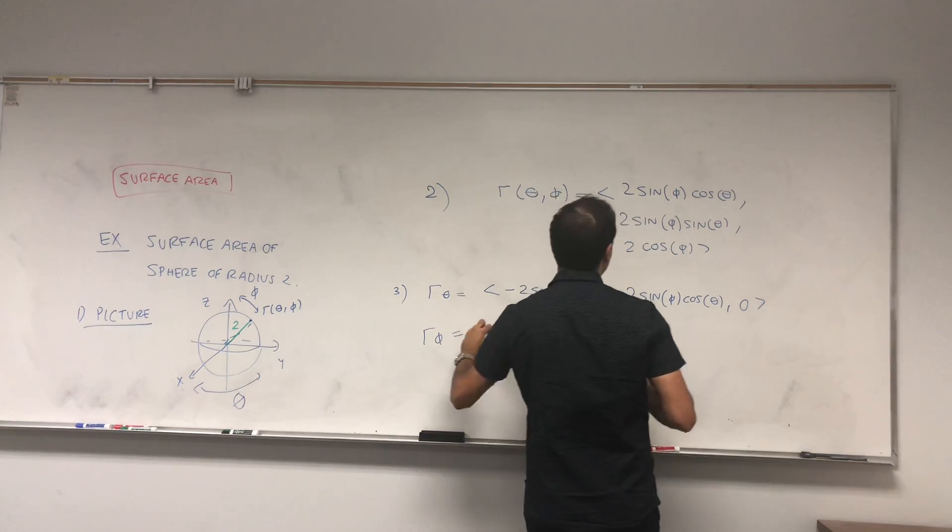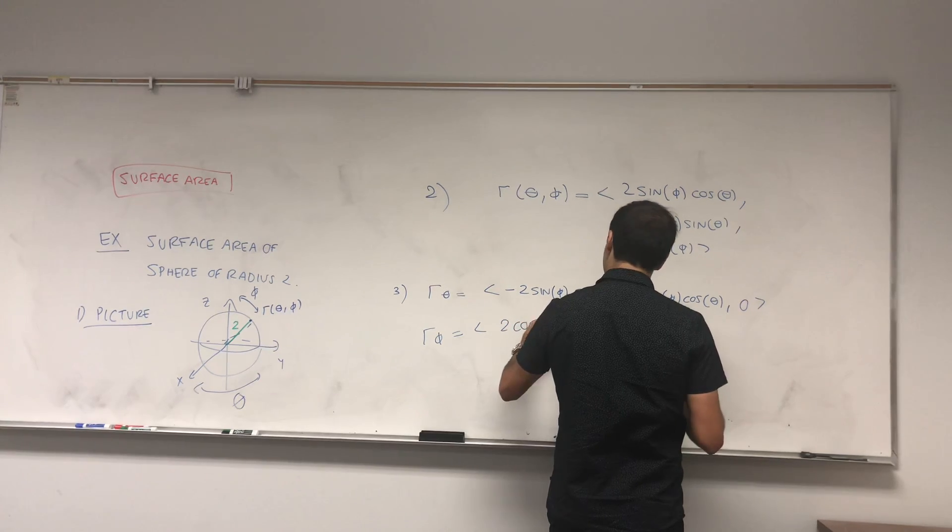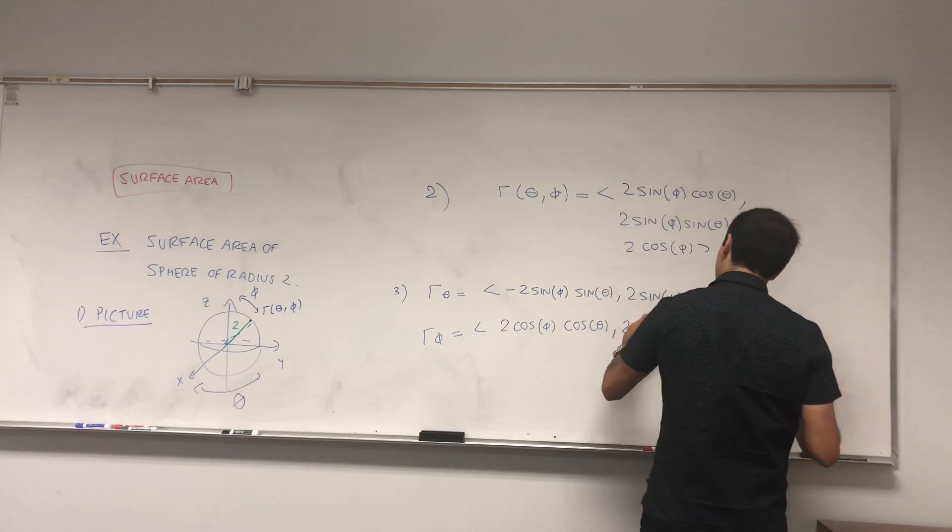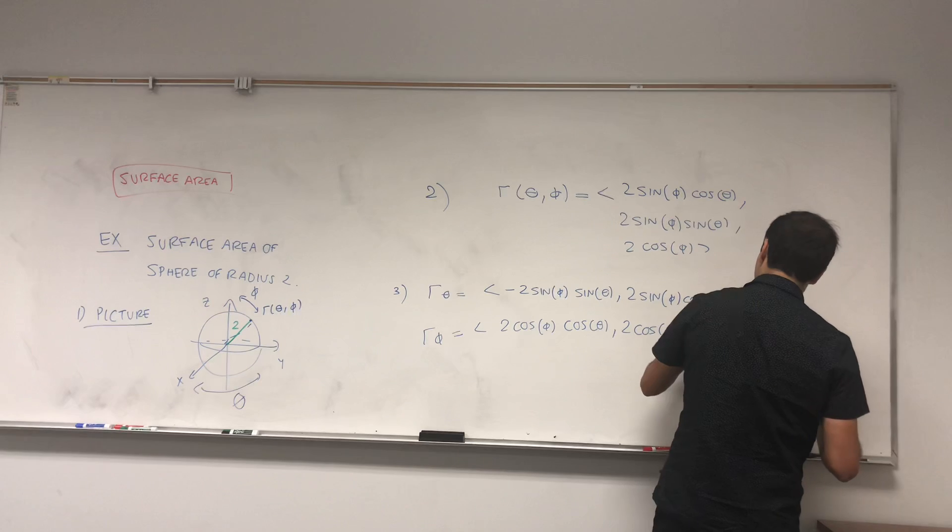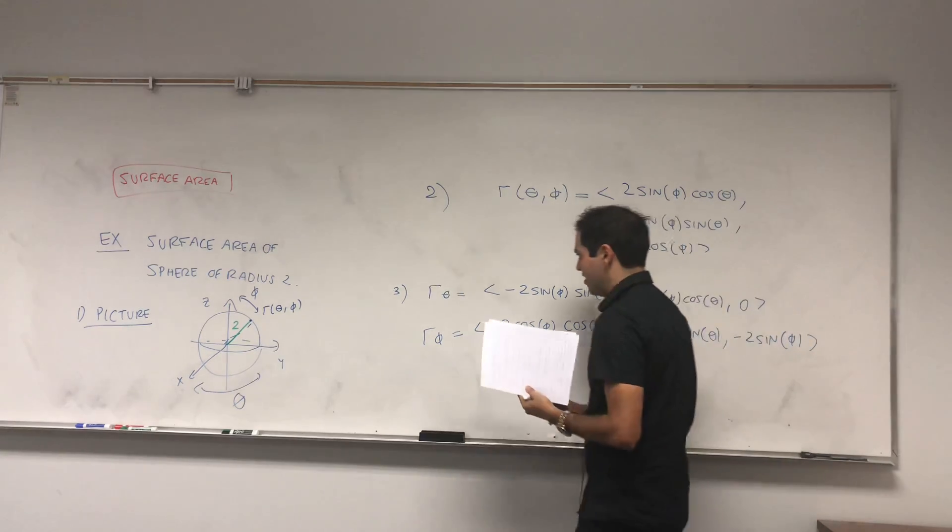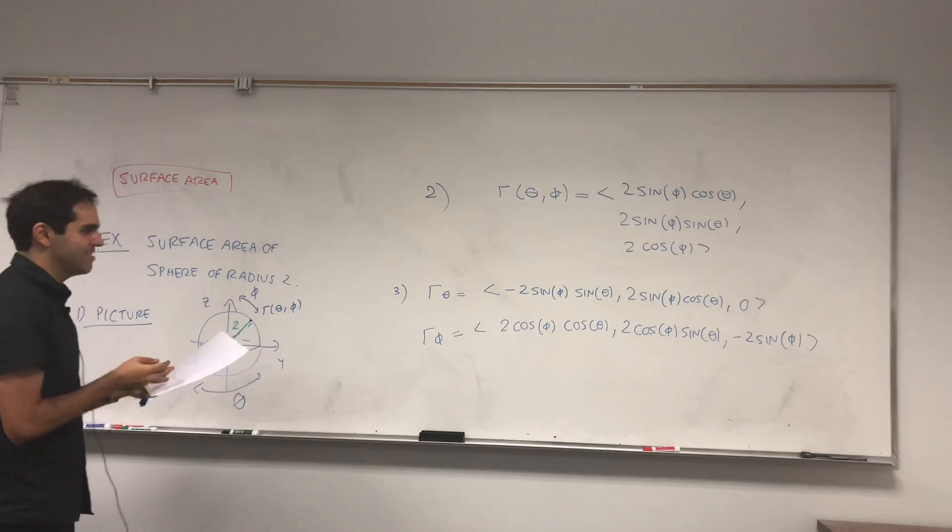And r_phi, which is 2 cos(phi) cos(theta), 2 cos(phi) sin(theta), -2 sin(phi). I need to make sure there's no sine mistake because otherwise it gets very messy.